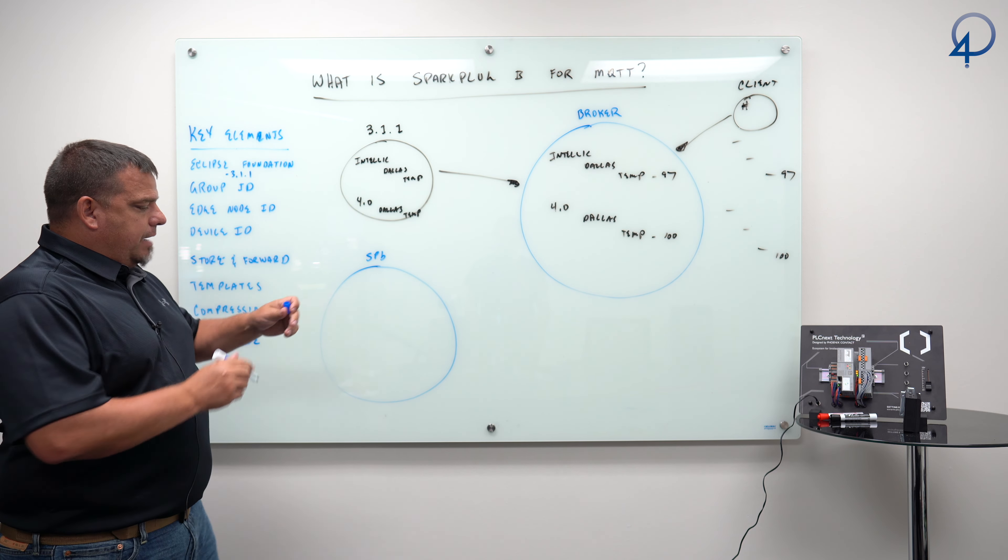It is based on the MQTT 3.1.1 standard — one of the first things you learn about Spark Plug B is that it's an extension of the base MQTT 3.1.1 standard. There will obviously be a new release for MQTT 5 at some point; MQTT 5 was released in 2019 but hasn't gotten wide adoption yet. Key elements we're going to talk about here include Group ID, Edge Node ID, and Device ID. We can package up MQTT payloads, group them together, and transmit them to a broker all packaged up nice and tidy instead of publishing individual topics.